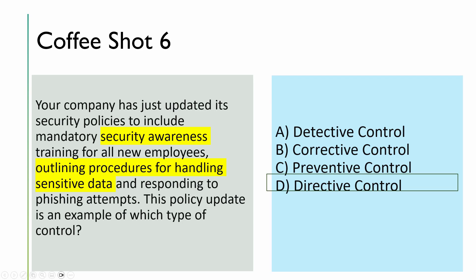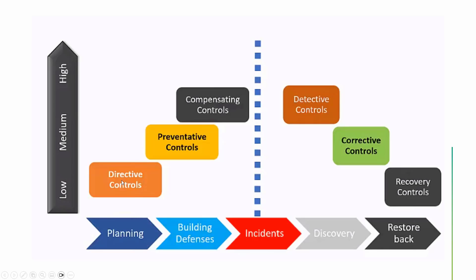Going back to the diagram: everyone creating a policy is a directive control. Adding a warning to that becomes deterrent. Then preventive control prevents users from accessing something. Compensating control is introduced when your primary preventive control is not effective. If an incident occurs, detective control identifies it, then corrective control addresses it, and recovery restores the system — corrective and recovery are combined in CompTIA Security+. That's all for this session — please let me know in the comments how you found it. I'm waiting for your feedback. Good day.